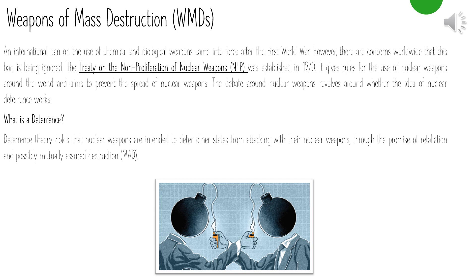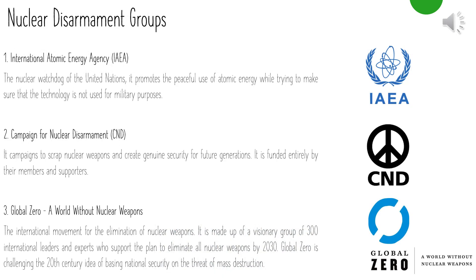The Treaty on the Non-Proliferation of Nuclear Weapons was established in 1970 — it gives rules for the use of nuclear weapons and aims to prevent their spread. The debate around nuclear weapons revolves around whether nuclear deterrence works. Deterrence theory holds that nuclear weapons are intended to deter other states from attacking, through the promise of retaliation and possibly mutually assured destruction. There are many groups seeking nuclear disarmament, including the International Atomic Energy Agency, which aims to promote peaceful use of atomic energy while preventing its use for military purposes, and the Campaign for Nuclear Disarmament, which campaigns to scrap nuclear weapons and create genuine security for future generations.